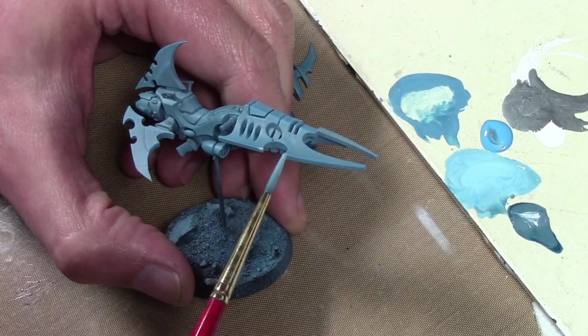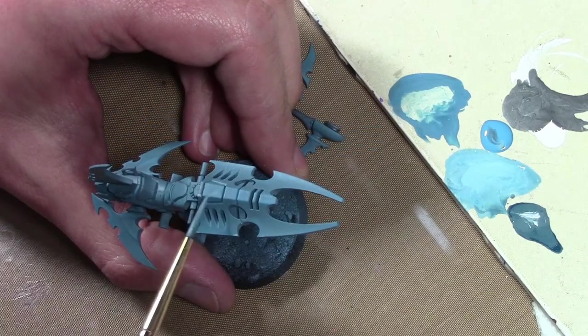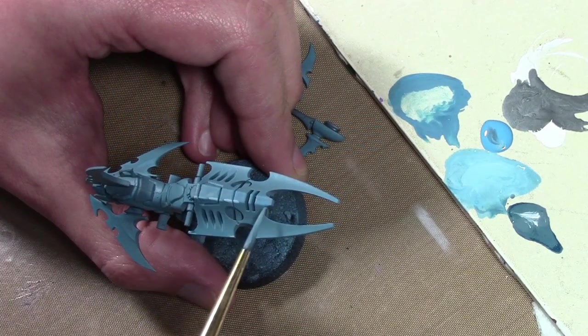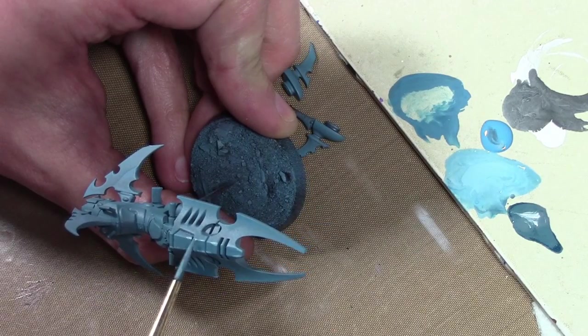And then one final highlight edging layer mixing in a great amount of white to that previous mixture and just hitting the edges, the tips of the edges here and there.